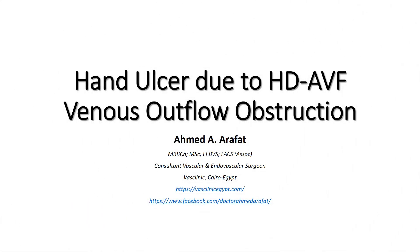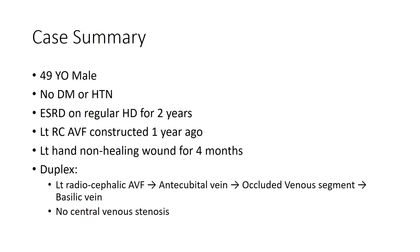Hand ulcer due to a haemodialysis AV fistula venous outflow obstruction. Case summary: 49-year-old male, no diabetes or hypertension, with end-stage renal disease on regular haemodialysis for 2 years. A left radiocephalic AV fistula was constructed 1 year ago, and he presented with a left hand non-healing wound for 4 months.